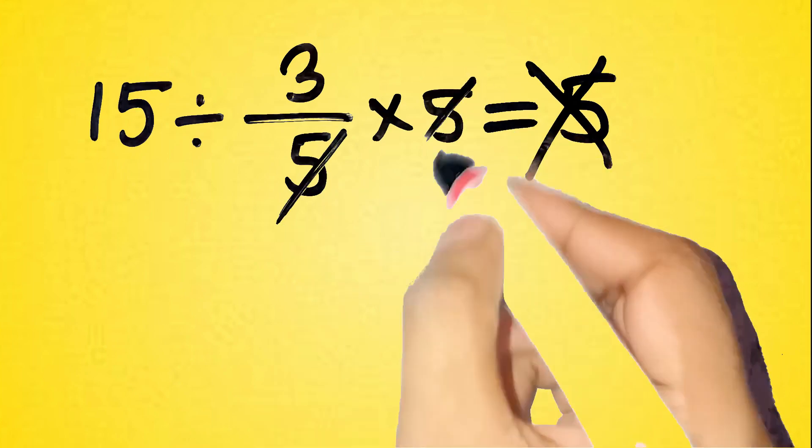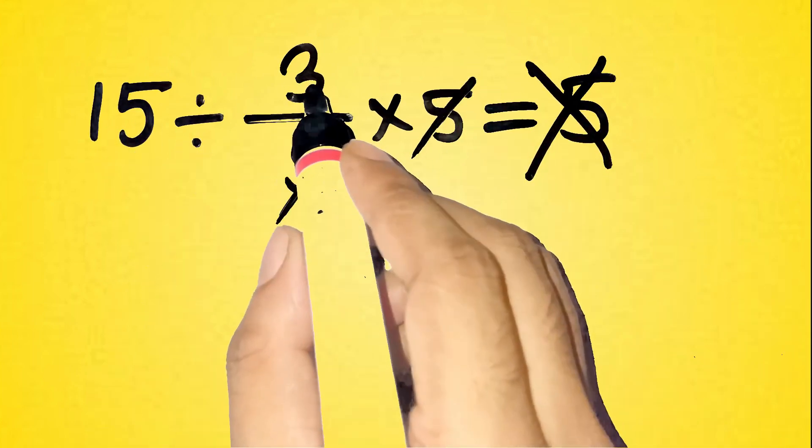You're probably thinking, oh, the 5s cancel out, so 15 divided by 3 is 5, right?